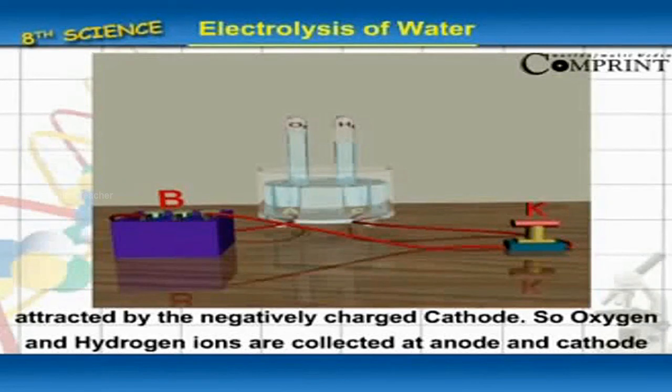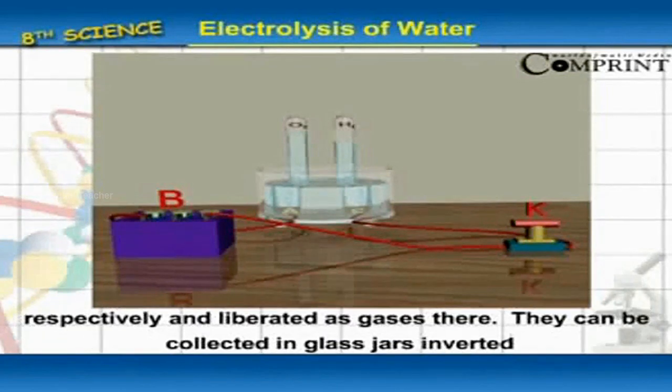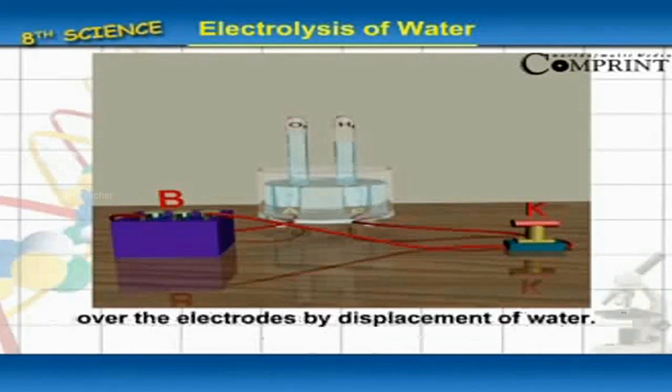So oxygen and hydrogen ions are collected at anode and cathode respectively and liberated as gases there. They can be collected in glass jars inverted over the electrodes by displacement of water.